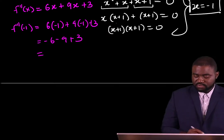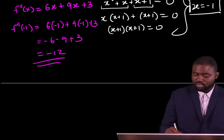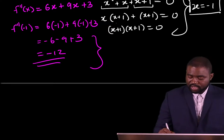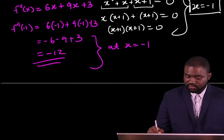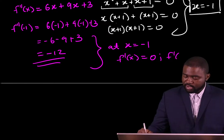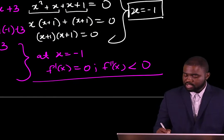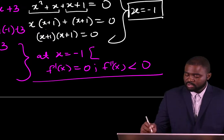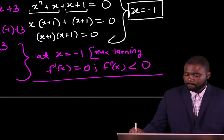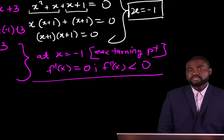That is negative 6 plus 6, which gives us 0. Wait — working through the arithmetic: we get a negative value. So we conclude that at x equal to negative 1, f prime of x is equal to 0 and f double prime of x is less than 0. That means the point x equal to negative 1 is a maximum turning point.